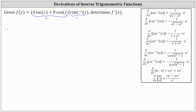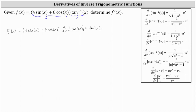Which means in our case, f prime of x is equal to the first function of four sine x plus eight cosine x, times the derivative of the second function, which is the derivative of inverse tangent x with respect to x, and then plus the second function of inverse tangent x times the derivative of the first function, which is the derivative of four sine x plus eight cosine x with respect to x.